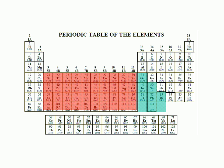Here's silicon — its symbol is Si. Here's lead — its symbol is Pb. Here's sodium — its symbol is Na. And here's chromium — its symbol is Cr.